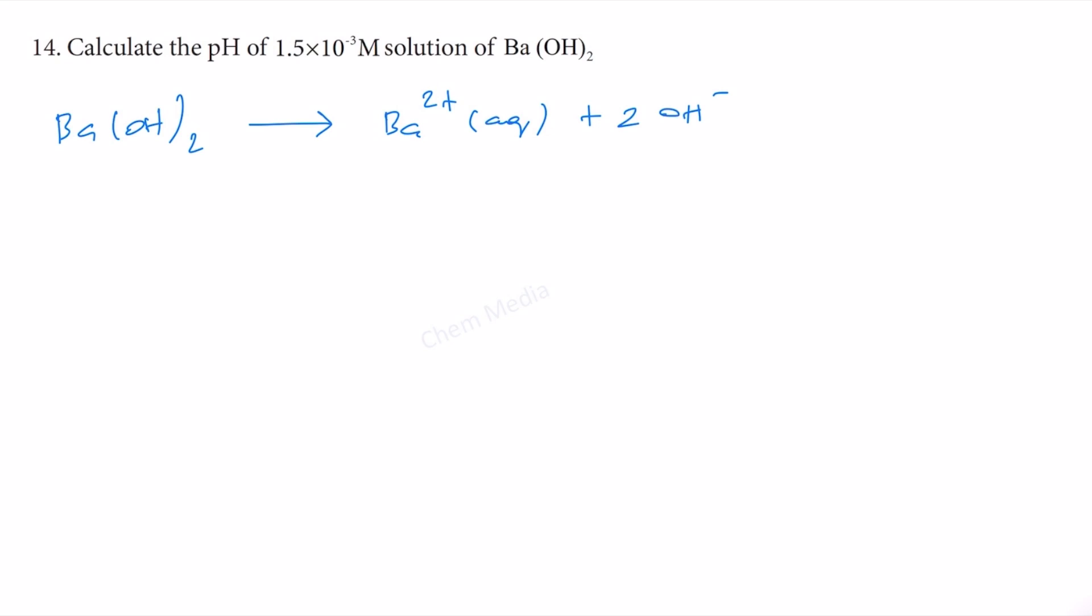Here the concentration of barium hydroxide is given as 1.5×10^-3 molar. If the molar solubility of barium 2+ is s, then the molar solubility of OH- is 2s in this case.